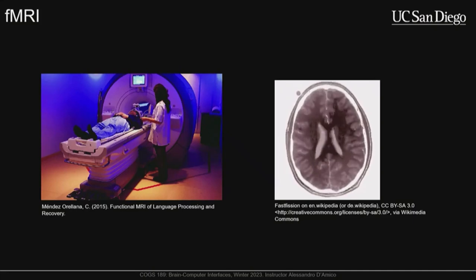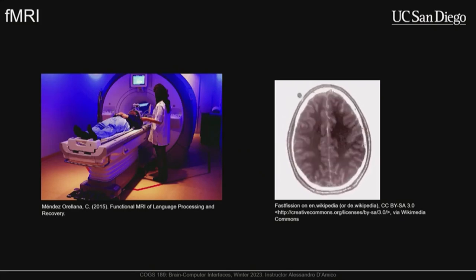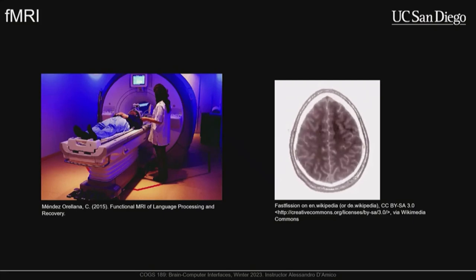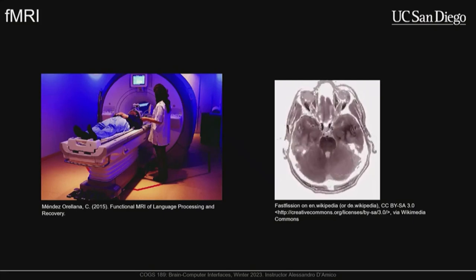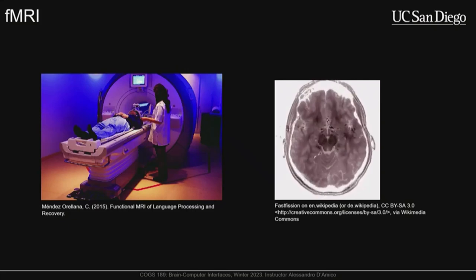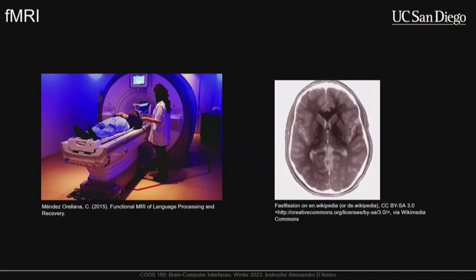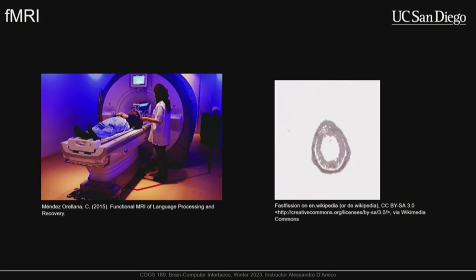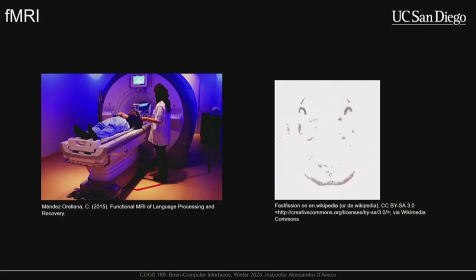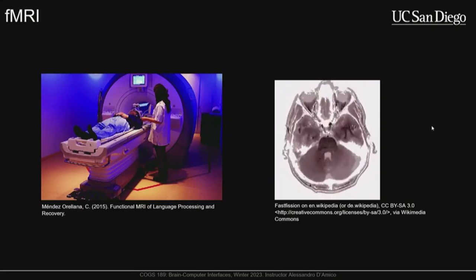It's actually measuring deoxygenated blood, not oxygenated blood, because of particular properties of deoxyhemoglobin. Essentially, when blood moves through the brain, the free hydrogen atoms are in random spins. When the magnet turns on, it aligns all the hydrogen atoms in the same direction, providing enough contrast with surrounding matter to image the tissue in that location. This is a hand-wavy explanation — I'm not an fMRI researcher — but that's roughly the biophysics of how fMRI works.